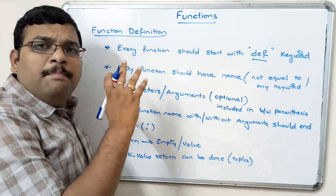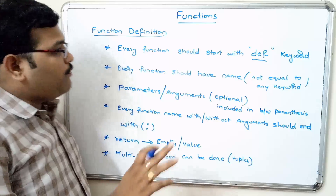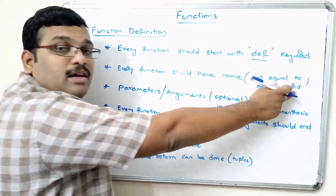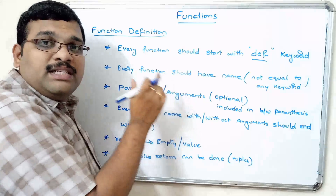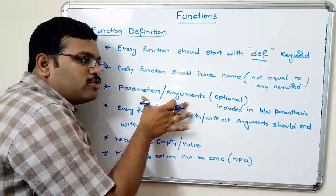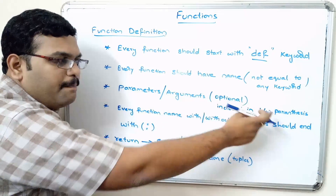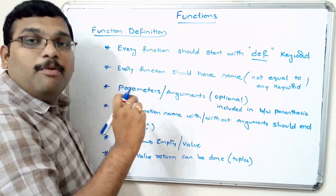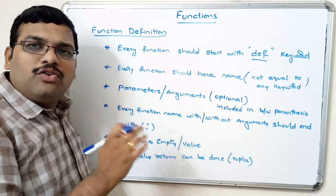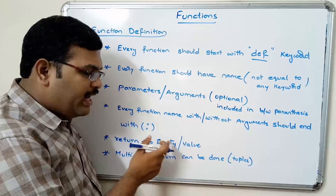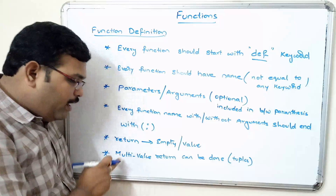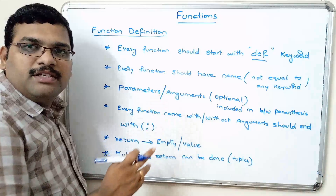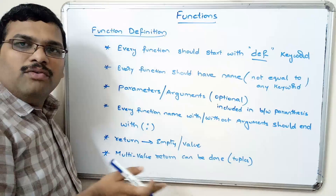So these are the important points for writing a function definition: first it should start with the 'def' keyword; next it should have a name that does not match any keyword; then we write parameters — which are optional — inside parentheses; after the parentheses every function ends with a colon for indentation; and every function returns control to its parent calling function, either as an empty return or a value return. Multi-value return can be done using tuples.